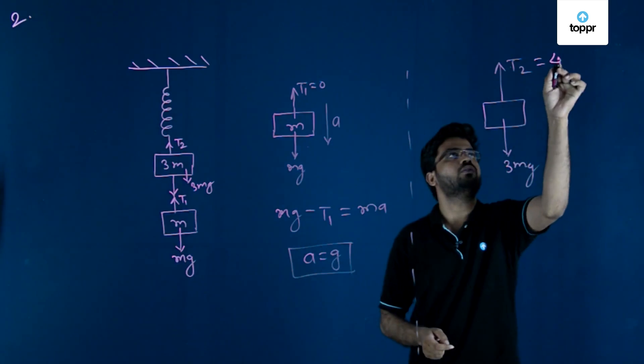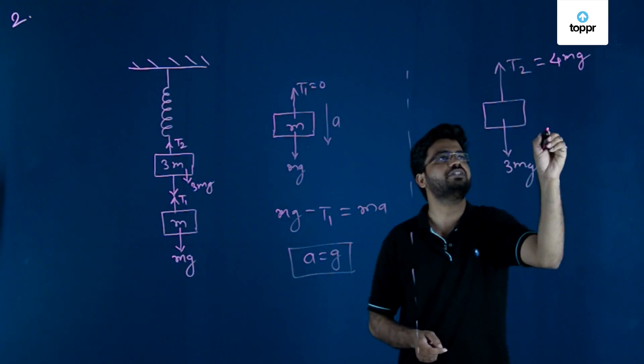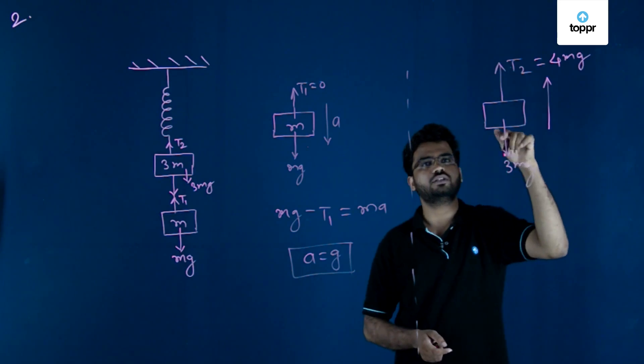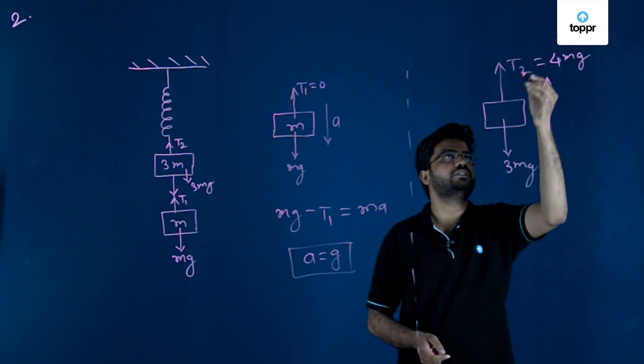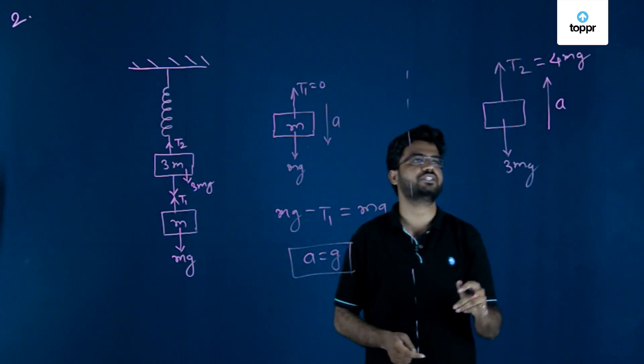T2 is equal to 4mg. As the force in the upward direction is larger, the acceleration is in the upward direction.